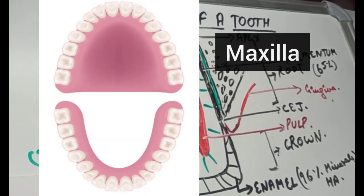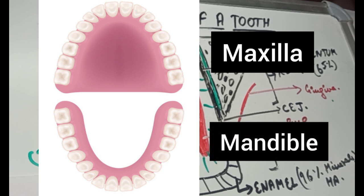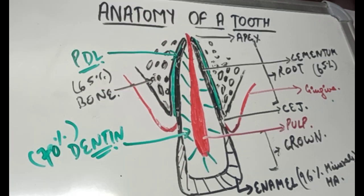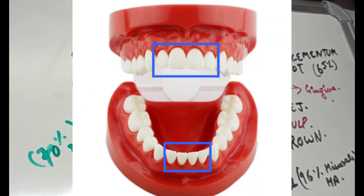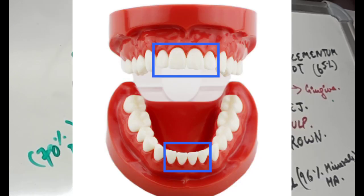The upper teeth are connected to the maxilla and are called the maxillary teeth. The lower teeth are connected to the lower jaw or the mandible, so they are called the mandibular teeth. Now let's see the types of teeth. Teeth are categorized according to their shape, location, and function. The front four teeth are the incisors — the central incisors and the lateral incisors. They are used for slicing food, aesthetics as they are in front, and phonetics, as they help in the pronunciation of F and V sounds.